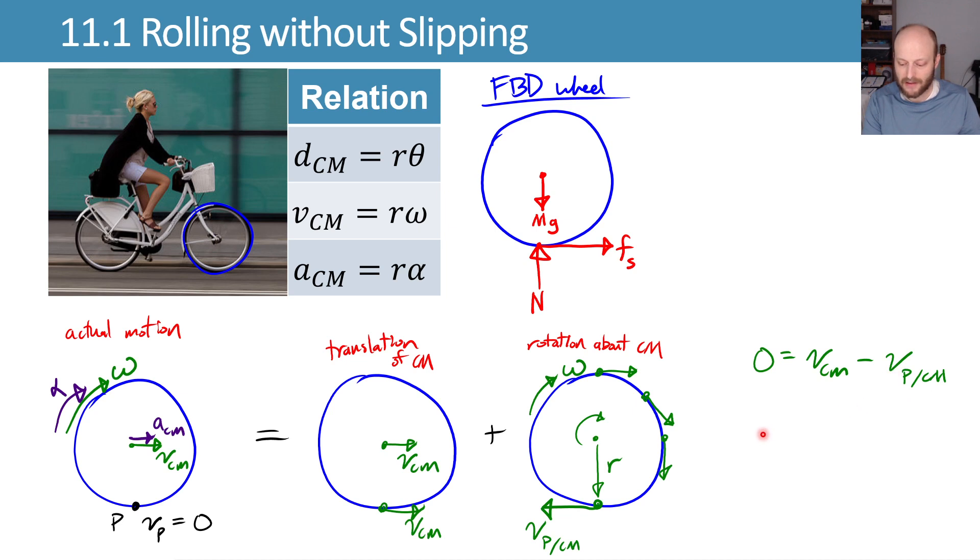We can rearrange this and say that the velocity of the center of mass is now equal to the velocity of P with respect to the center of mass, which remember is r omega. And this shows that the velocity of the center of mass of this wheel, as long as it's rolling without slipping, equals r omega.